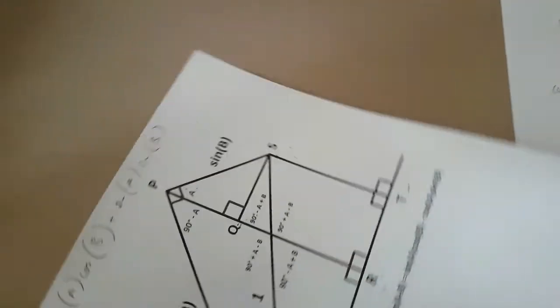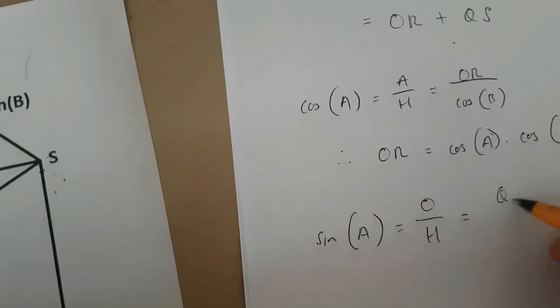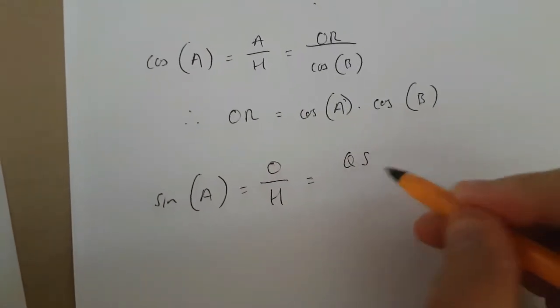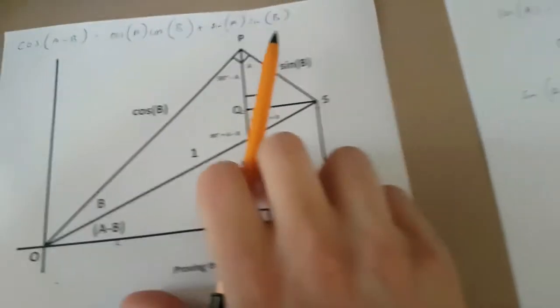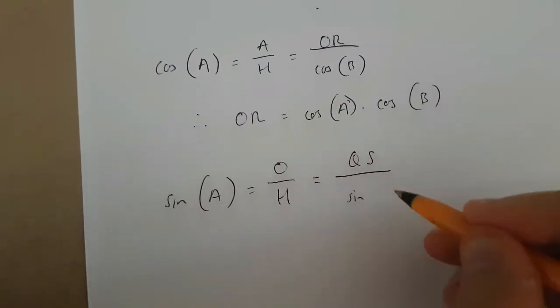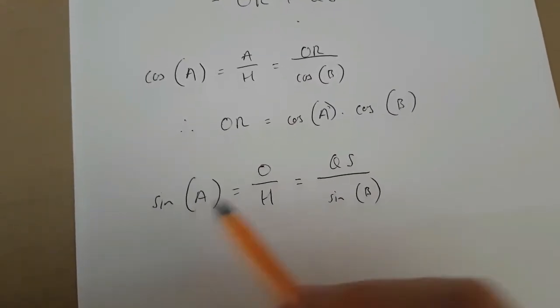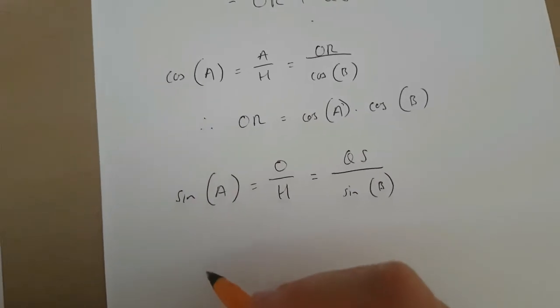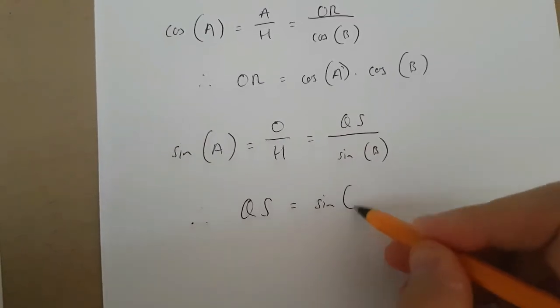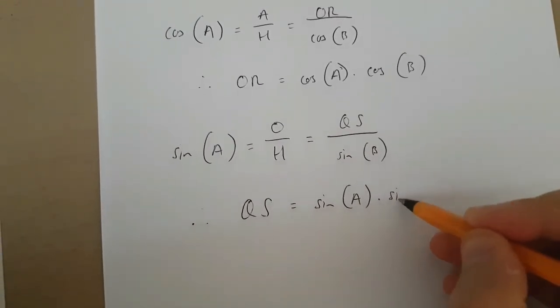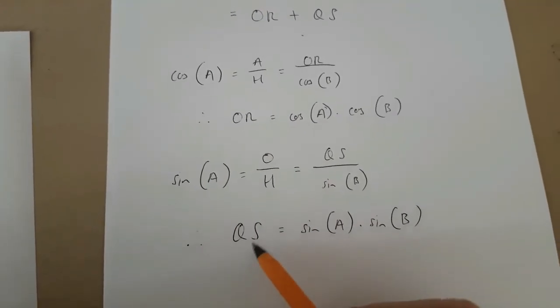Now, the opposite side of sin(A) is going to be QS. And its hypotenuse is sin(B). This means that sin(A) is QS over sin(B), which also means that QS is sin(A) times sin(B). So we've discovered what QS is.